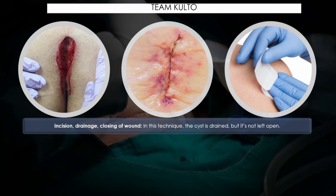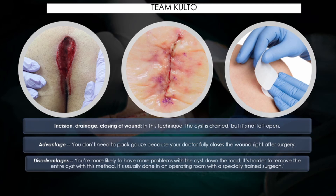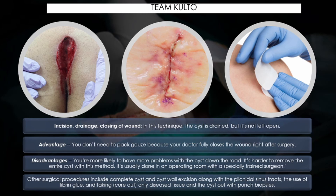The last option is incision, drainage, and closing of the wound, where the wound is actually closed. In this technique the cyst is drained but it is not left open, unlike incision and drainage. The advantage is you don't need to pack gauze because the doctor fully closes the wound right after surgery. The disadvantage is the patient is more likely to have more problems with the cyst down the road — it's harder to remove the entire cyst with this method. It is usually done in an operating room with a specially trained surgeon. Other surgical procedures include complete cyst and cyst wall excision along with the pilonidal sinus tract, the use of fibrin glue, and taking only diseased tissue and cyst out with pouch biopsies.